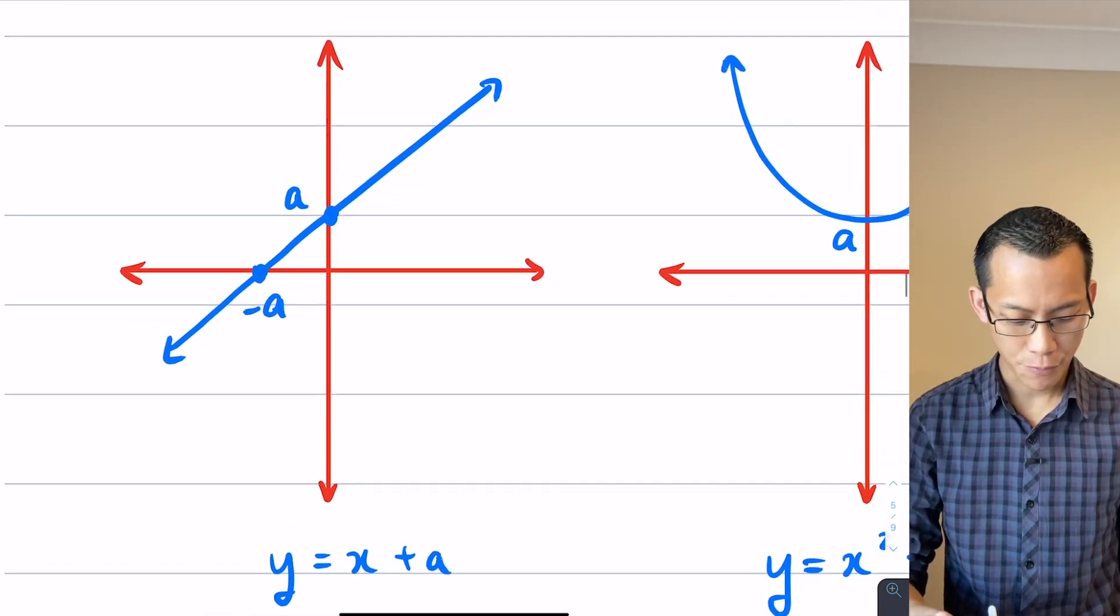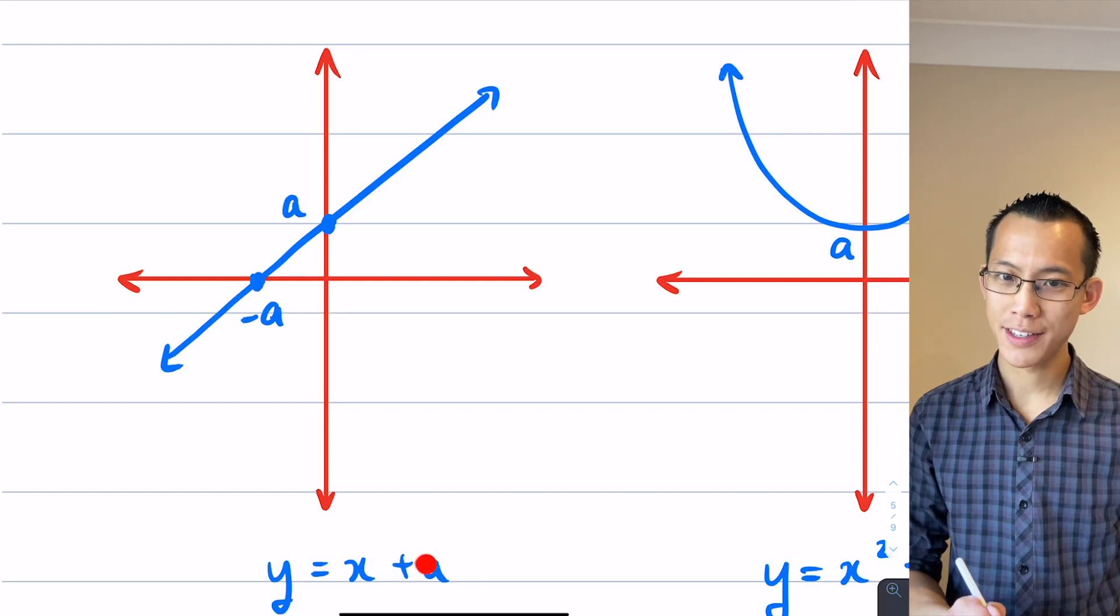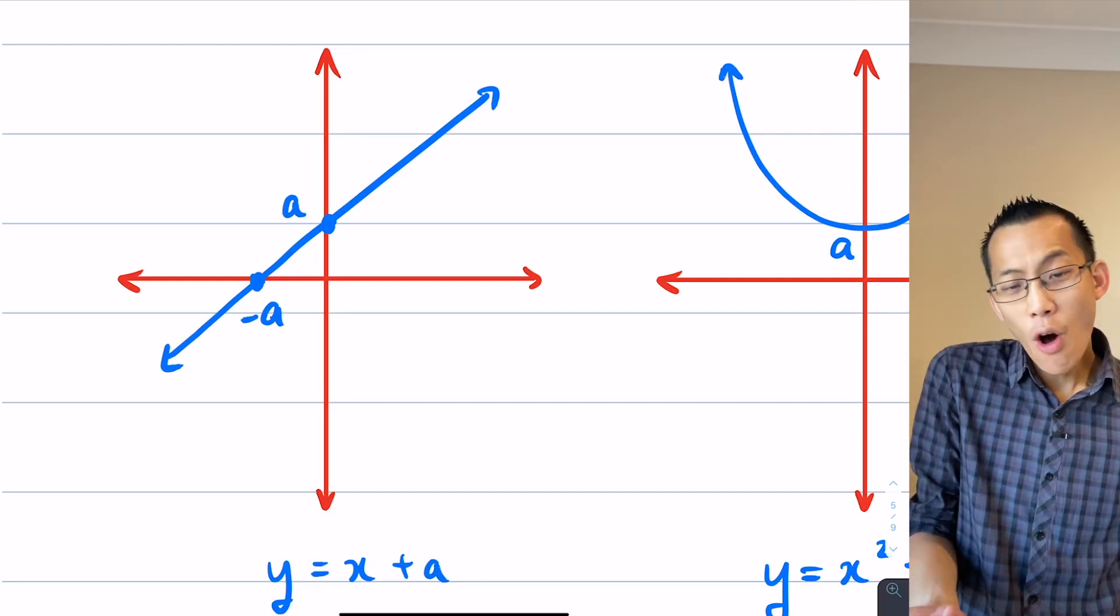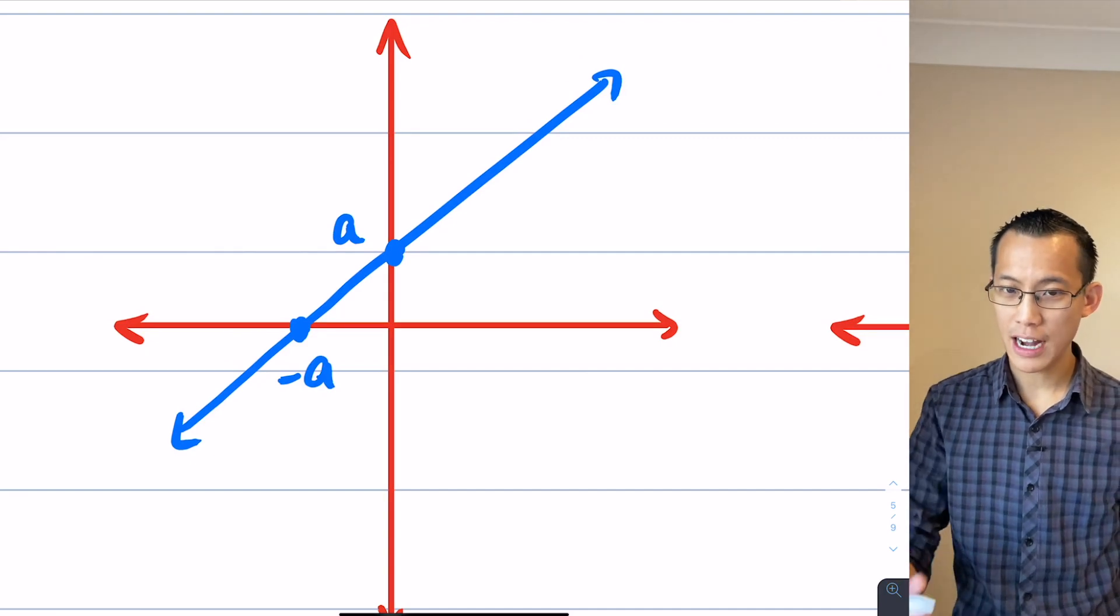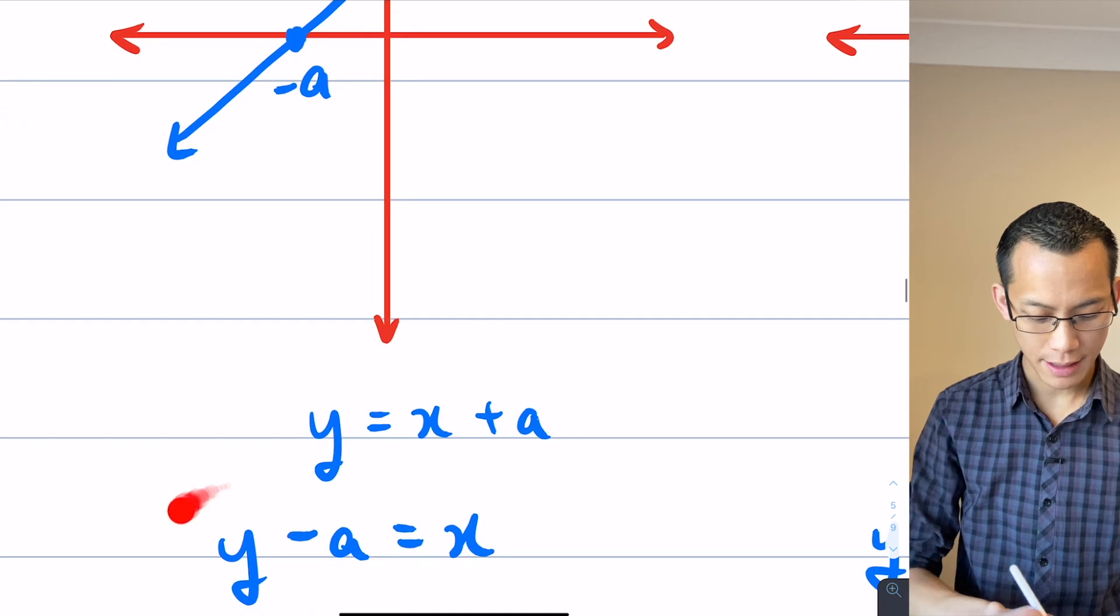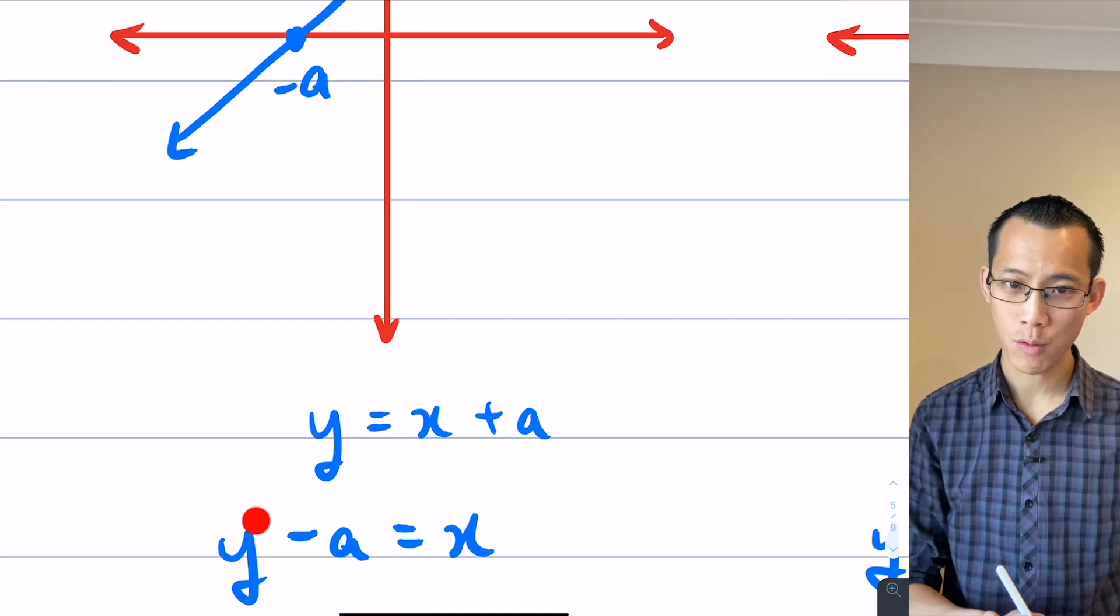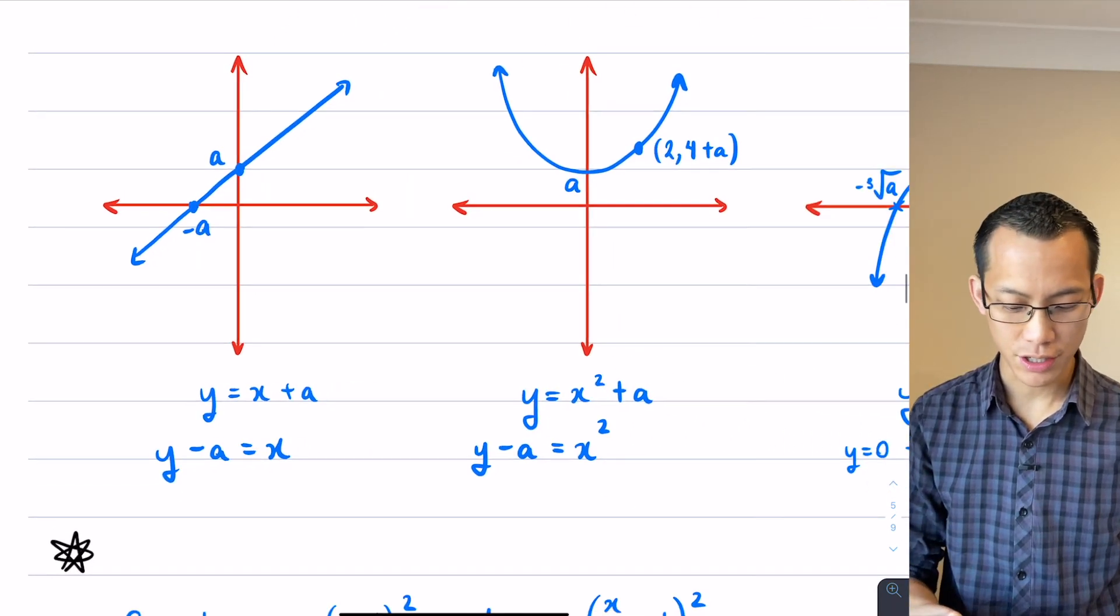So that would be the first way of saying it. Look, it's x plus A. I've moved to the left A units. Alternatively, I can think about it the way I've just explained. This is a graph that started with y equals x and then I moved upwards. So that would be a way of thinking it like this. The change is really affecting the y. Now it's important that I mention this only applies to linear functions.